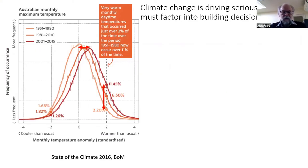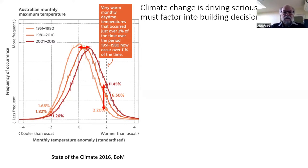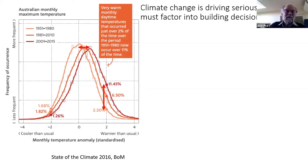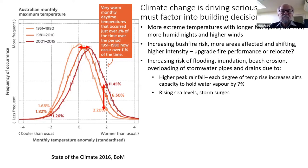If we look at the temperature of the earth, on average it's a normal distribution — a few hot days, a few cold days, and a lot in the middle. We have already shifted the mean about a degree, and the percentage of hot days goes up much more than you might expect from just a small change in the average, because we're going up that steep slope of the normal distribution curve. If we have another degree of warming, we're going to have another doubling on top of the quadrupling of hot days we've already got.